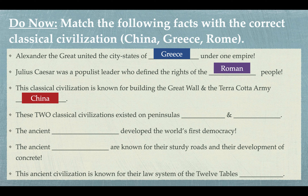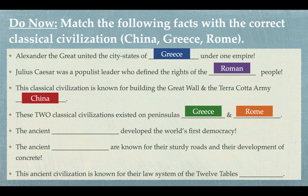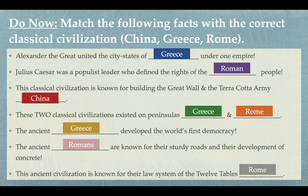Number four, these two classical civilizations existed on peninsulas. A peninsula is kind of like an island, however it is only surrounded by water on three sides, whereas an island is surrounded by water on all sides. Greece and Rome — those two civilizations were existing on peninsulas. Number five, the ancient blank developed the world's first democracy. We know that the birth of democracy came in the city-state of Athens, located in ancient Greece. Number six, the ancient blank are known for their sturdy roads and their development of concrete — who developed concrete other than the Romans? And finally, number seven, this ancient civilization is known for their law system of the 12 Tables. We wrote an essay about this in our specific lesson on the Romans, so the answer is Rome.